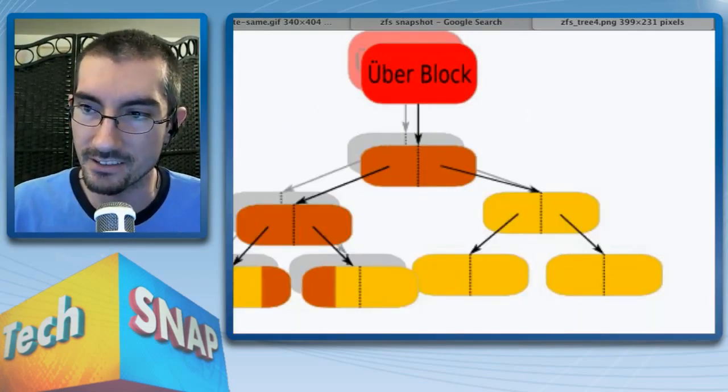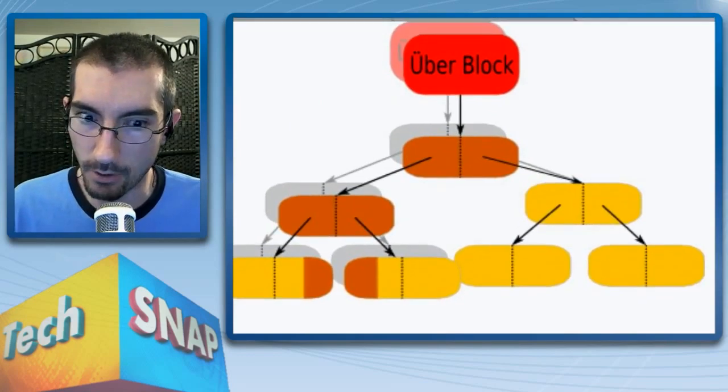ZFS also has snapshots — a read-only copy of the file system from a specific point in time. This is where copy-on-write really comes in: when you take a snapshot, those blocks are marked as being used in two places — the original copy and the snapshot. If you change any data that was in the snapshot, it gets copied to a new place for the newer version, leaving the snapshot as a perfect historical copy. You can essentially make an exact copy of a drive's contents and mount it as another data set.